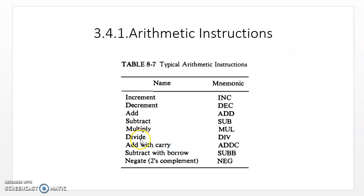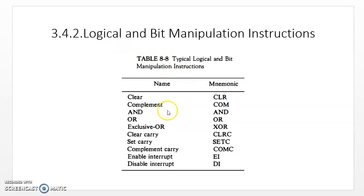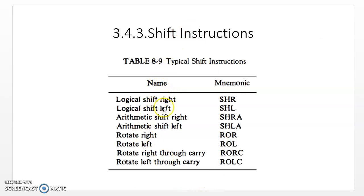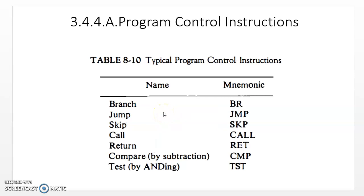Then we started the 4th topic: typical instructions of a computer, starting with arithmetic instructions, which we covered. Next, logical and bit manipulation instructions — also completed — and then shift instructions. These three types of instructions are over. The remaining topic is program control instructions, which is today's topic. Let us complete this as well.